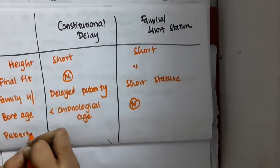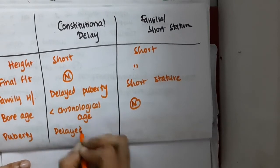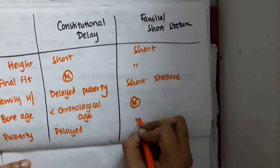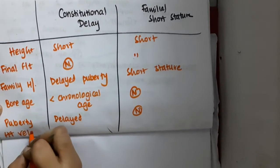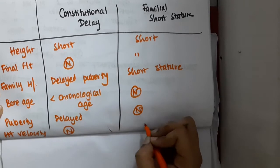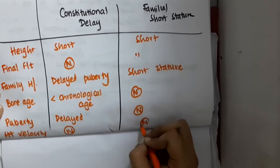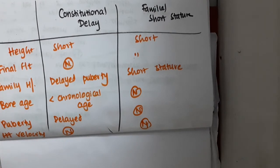If you see puberty, it is delayed in constitutional delay, whereas it is normal in familial short stature. Height velocity is normal in both constitutional delay and familial short stature. So this is about the differences between constitutional delay and familial short stature. Thank you for watching.